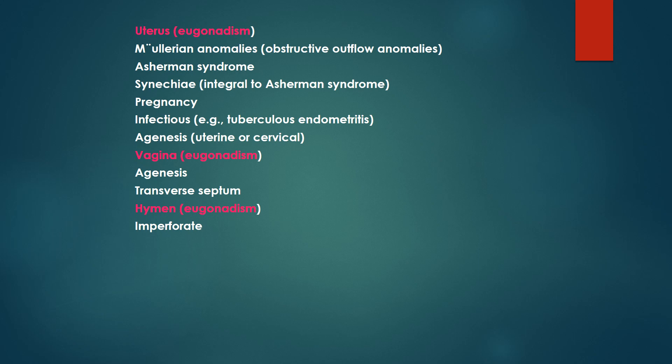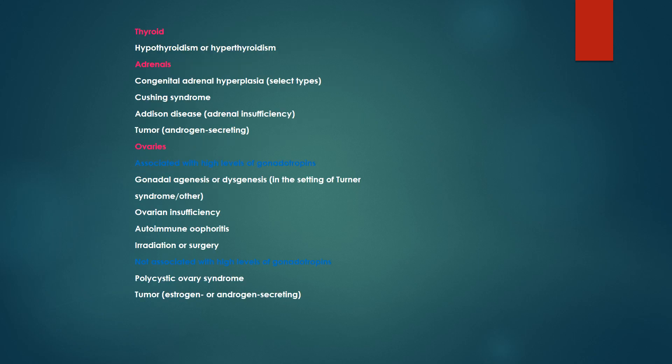Other uterine causes include Müllerian agenesis, Asherman syndrome, synechiae, pregnancy infections, agenesis, vaginal agenesis, transverse septum, and imperforate hymen. Thyroid causes could include hypothyroidism. Adrenal causes include congenital adrenal hyperplasia, Cushing syndrome, and Addison's disease. Ovarian causes include gonadal agenesis, ovarian insufficiency, autoimmune oophoritis, radiation, surgery, polycystic ovarian syndrome, and tumors.